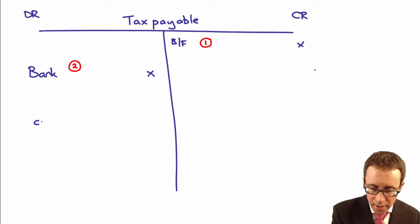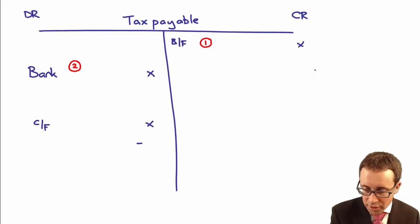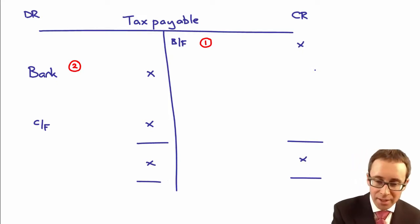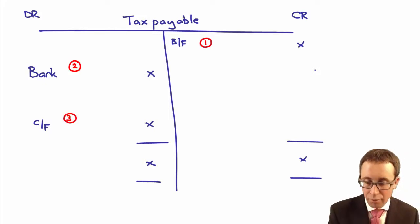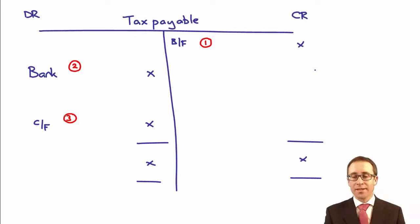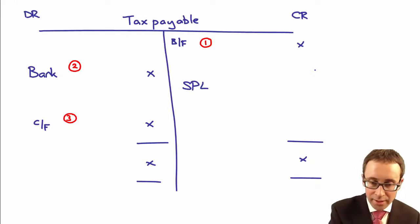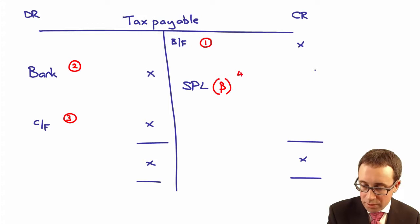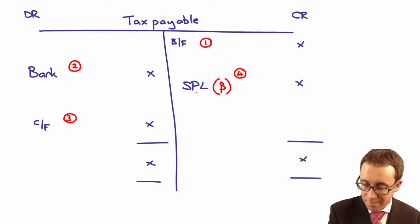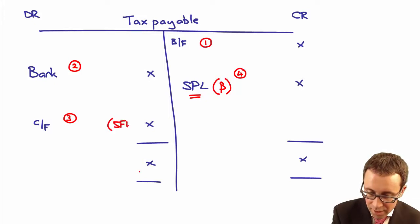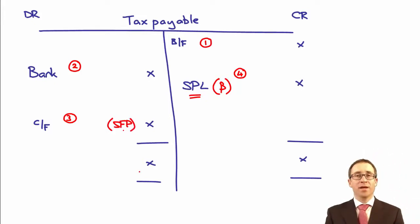Step three was to look at the estimate for this year — we recorded it on the debit side, because that would then be brought forward next year on the credit side as the opening liability. Then step four, we balanced everything off to the statement of profit or loss. The balancing figure was the statement of profit or loss — essentially crediting the payable and debiting the expense. The carry-forward figure from step three is the figure that you have in the SFP.